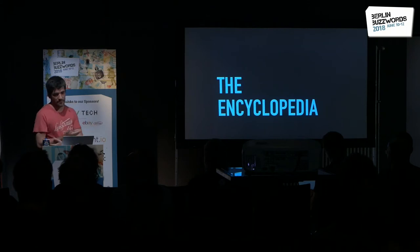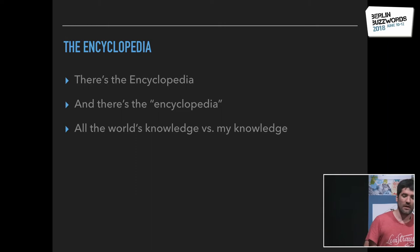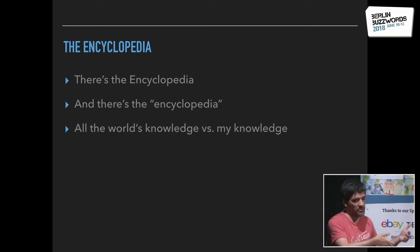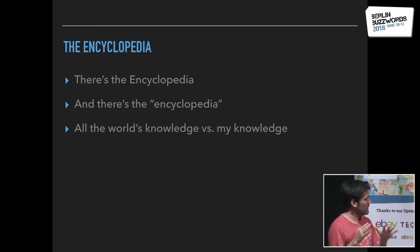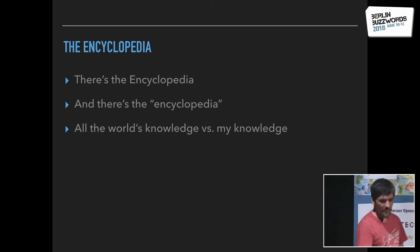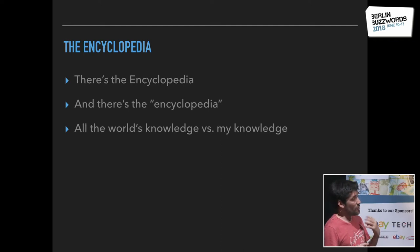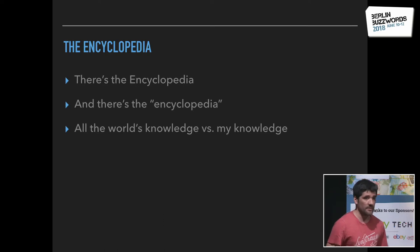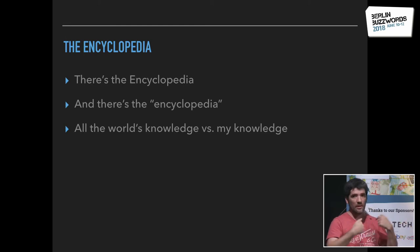Umberto Eco has the idea of the encyclopedia. There are two encyclopedias: the uppercase one is all of the world's knowledge, and the lowercase one is the knowledge we each have as individuals — our experiences, whatever we read and learned. So: all the world's knowledge versus my knowledge. What Eco says is that as an author you appeal to the encyclopedia of another person, so you don't have to write everything in your book. If I say I took a carriage to go back to Alexanderplatz, you probably assume there was a horse pulling it, because the author assumed we'd fill in details of this fictional world with details from the real world.